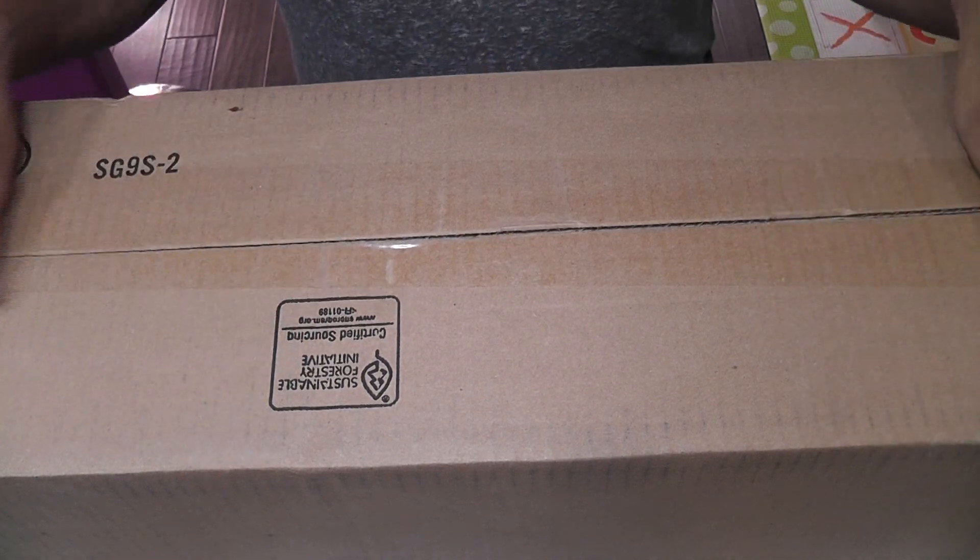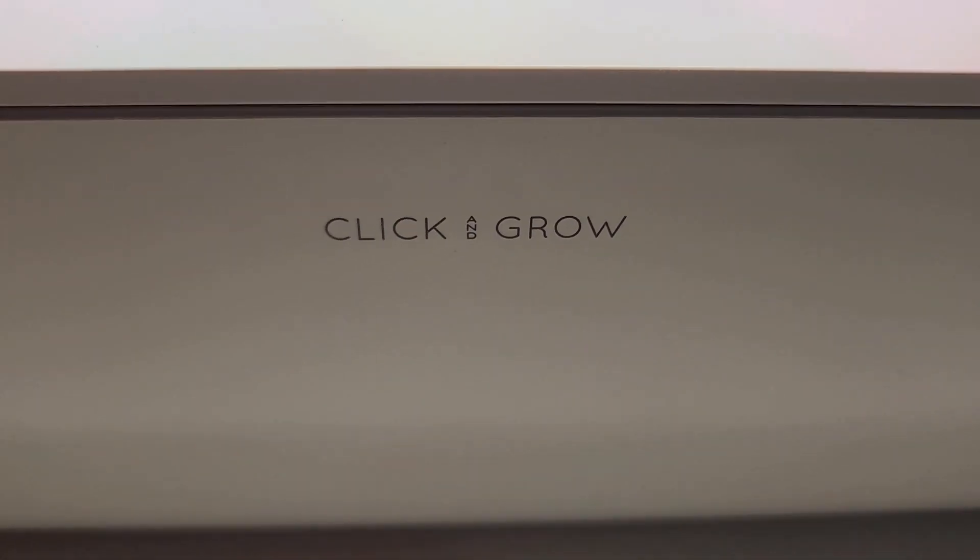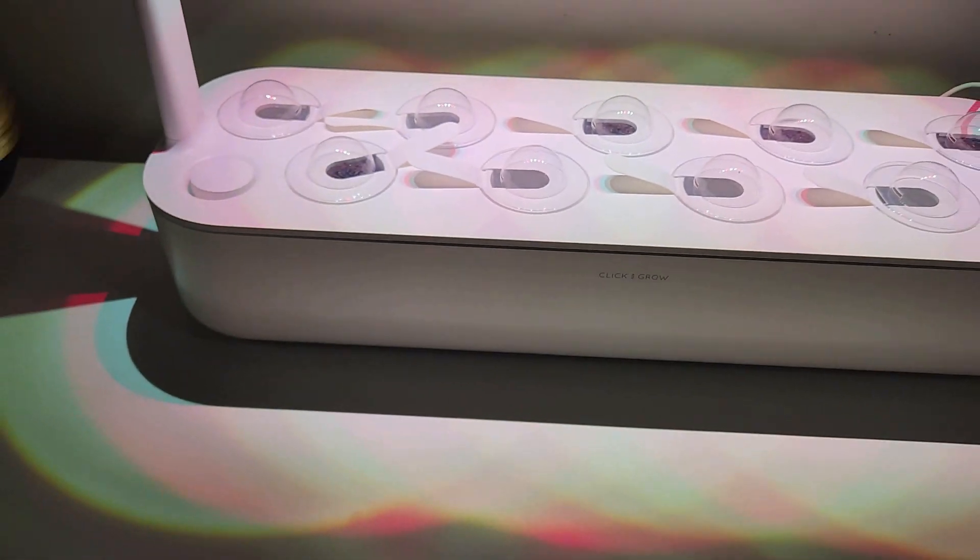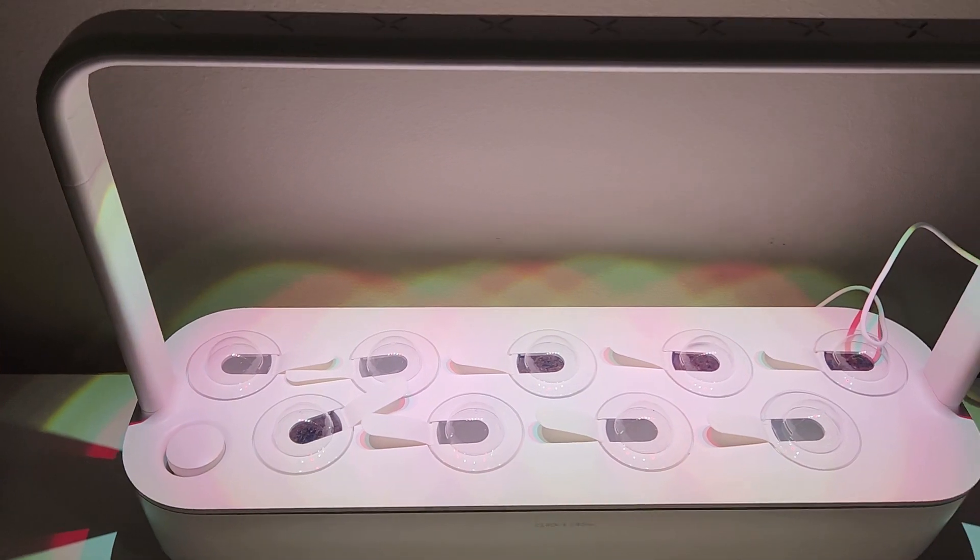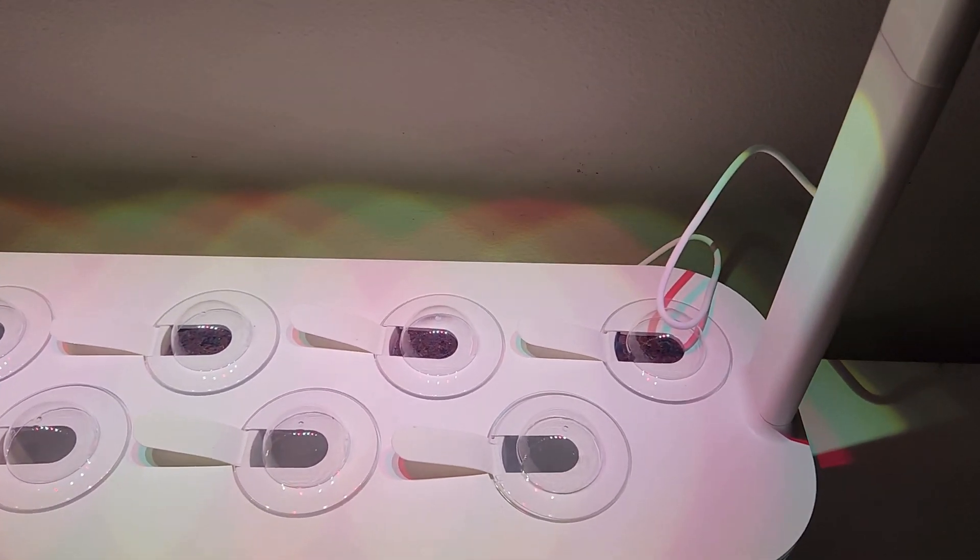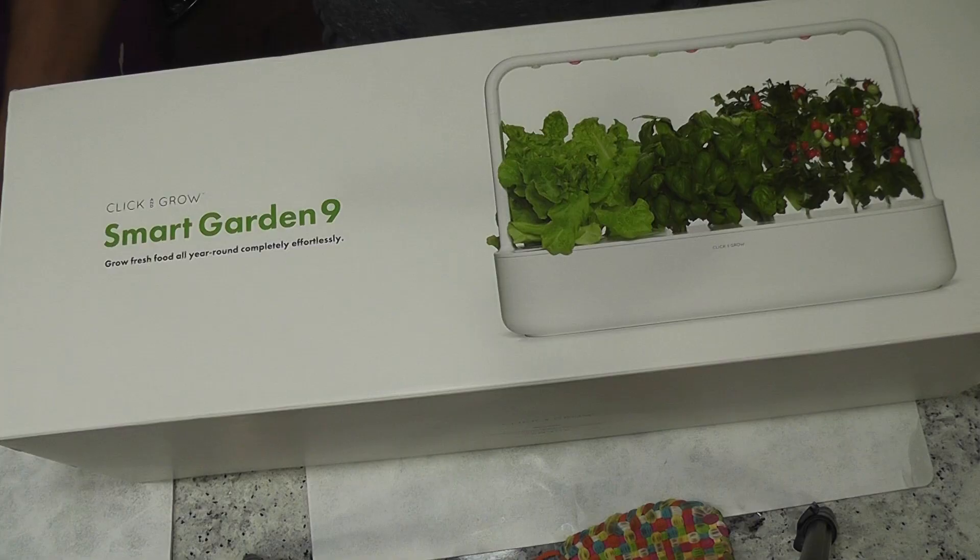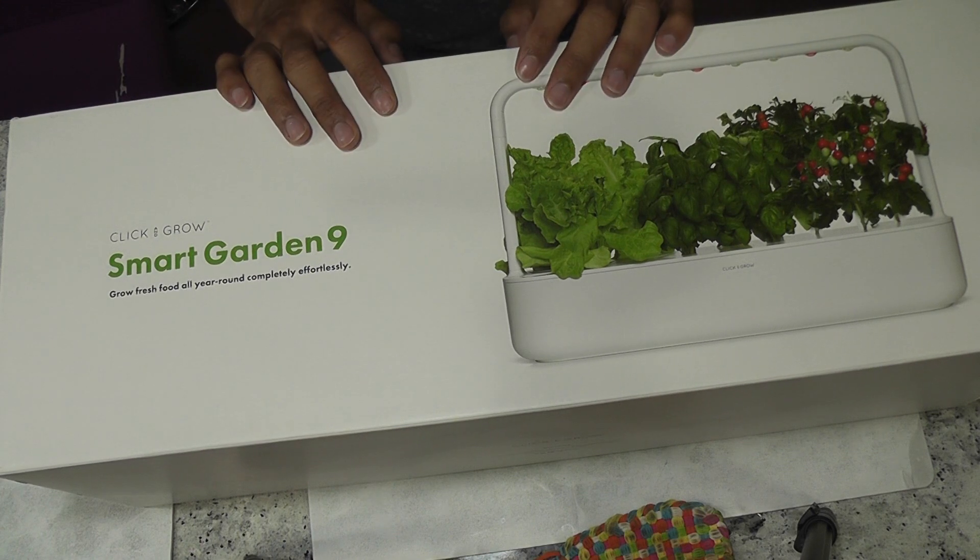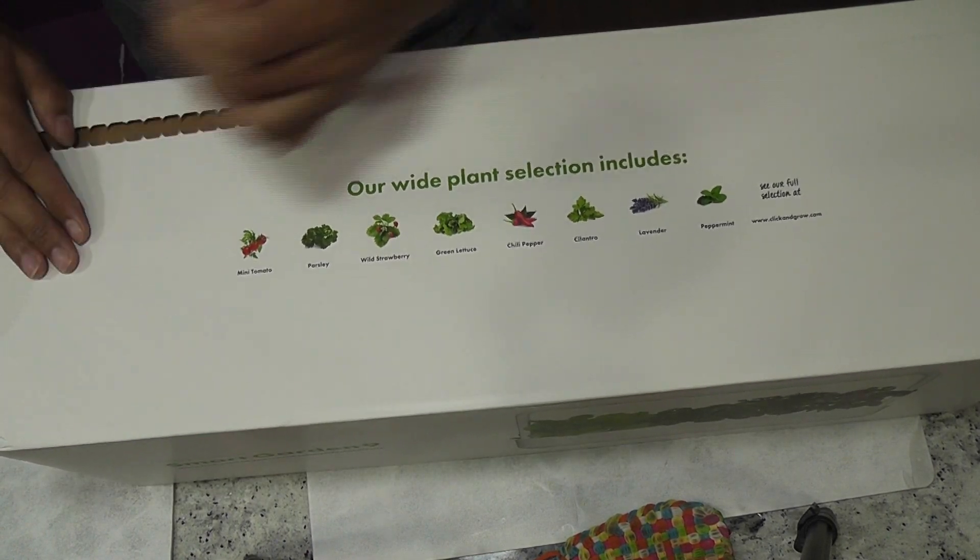Hi friends, I just got a new addition to my indoor garden collection. This is quite different from all the gardens I have so far. This is not a hydroponic system. This is a beautifully designed self-watering garden with built-in smart lights. It is called Smart Garden 9 from the company called Click and Grow. Let's see what it looks like, what accessories it came with, how it works, and eventually how it performs.